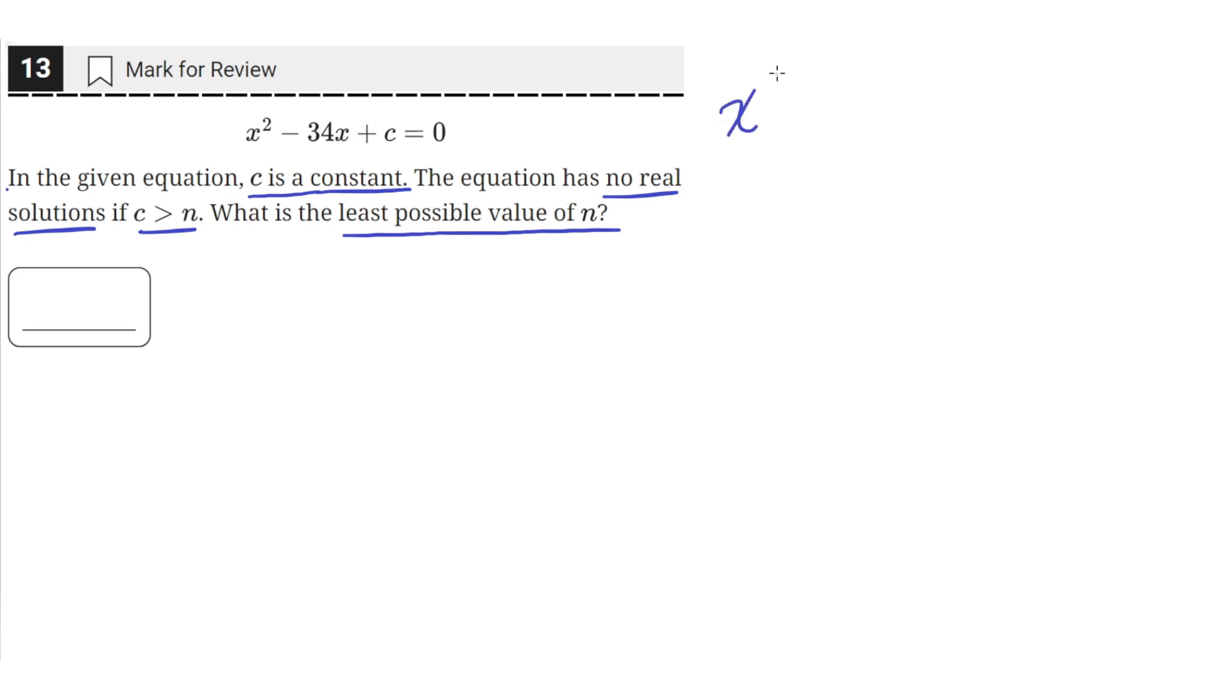So we have this quadratic x squared minus 34x plus c is equal to 0. And we need to find the value of n such that c is greater than n while maintaining that there are no real solutions. And we want the least possible value of n.